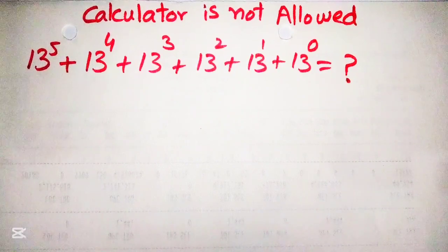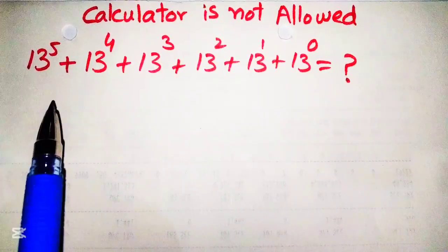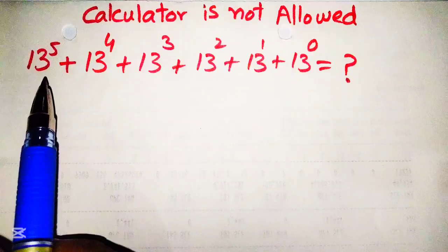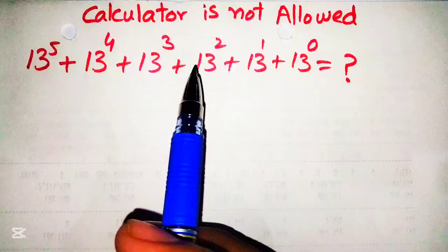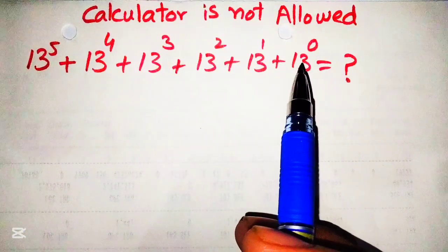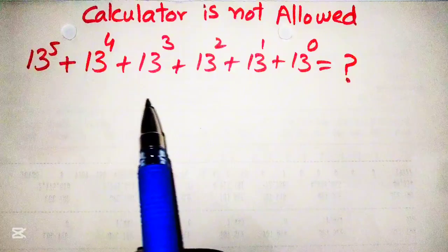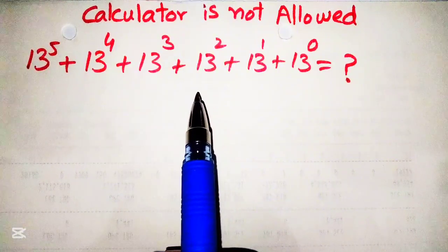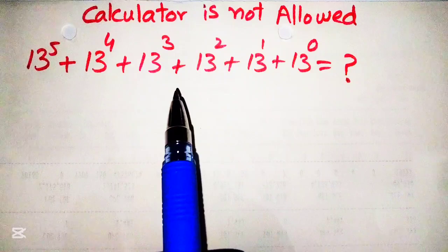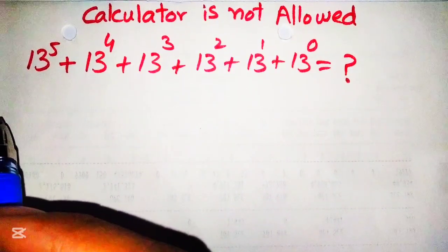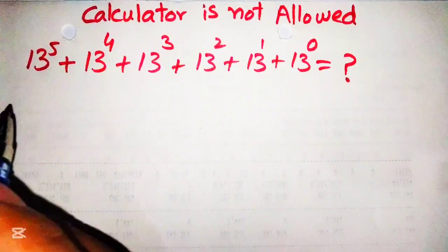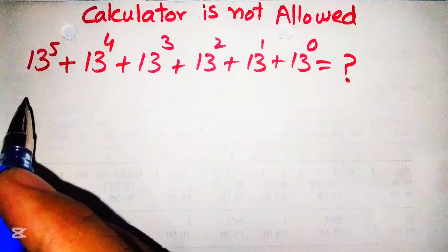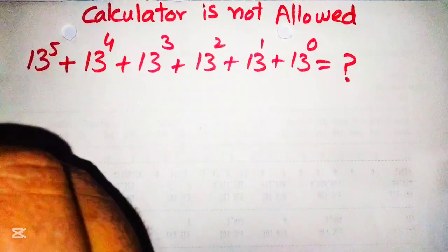Hello guys, welcome to my YouTube channel Olympiate Edge. Today we are given a very nice equation: 13 raised to power 5 plus 13 raised to power 4 plus 13 raised to power 3 plus 13 raised to power 2 plus 13 raised to power 1 plus 13 raised to power 0. We have to find the value of this. Remember, calculator is not allowed here, so we will use mathematical tricks and basic formulas.